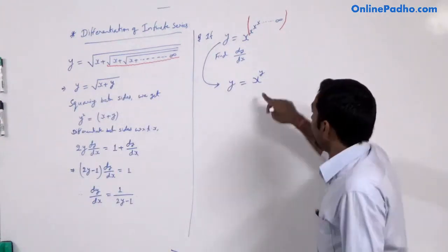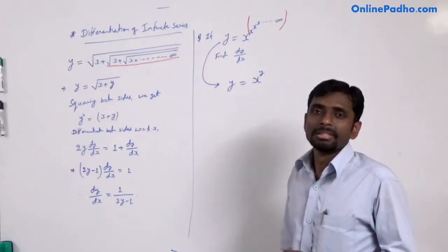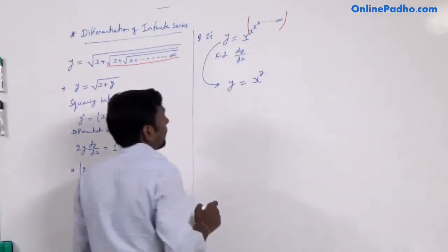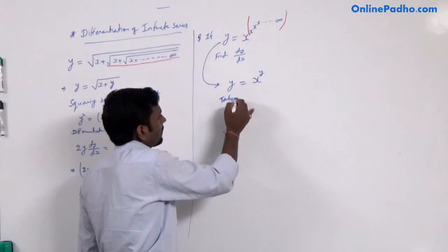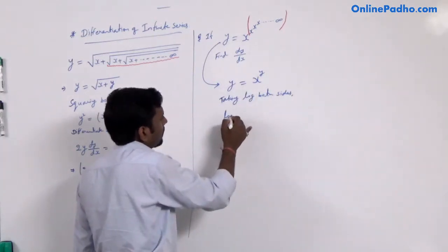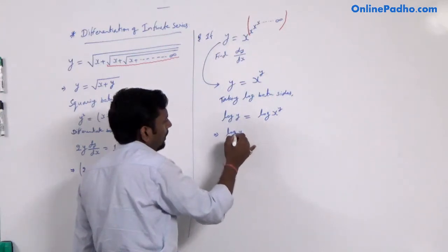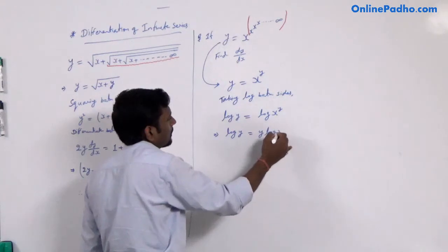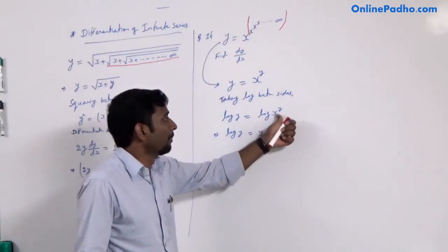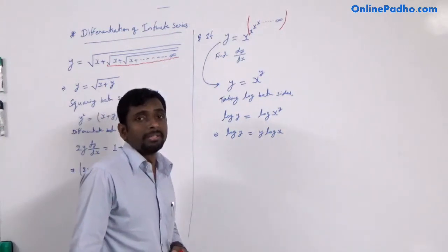Now we have variable to the power variable. In this case, we have to apply the concept of logarithmic differentiation. If you get variable to the power variable, you must apply logarithmic differentiation to simplify. Taking log of both sides, it can be written as log y equal to log(x^y). Using the log property log(m^n) = n·log(m), this becomes log y equal to y·log x.